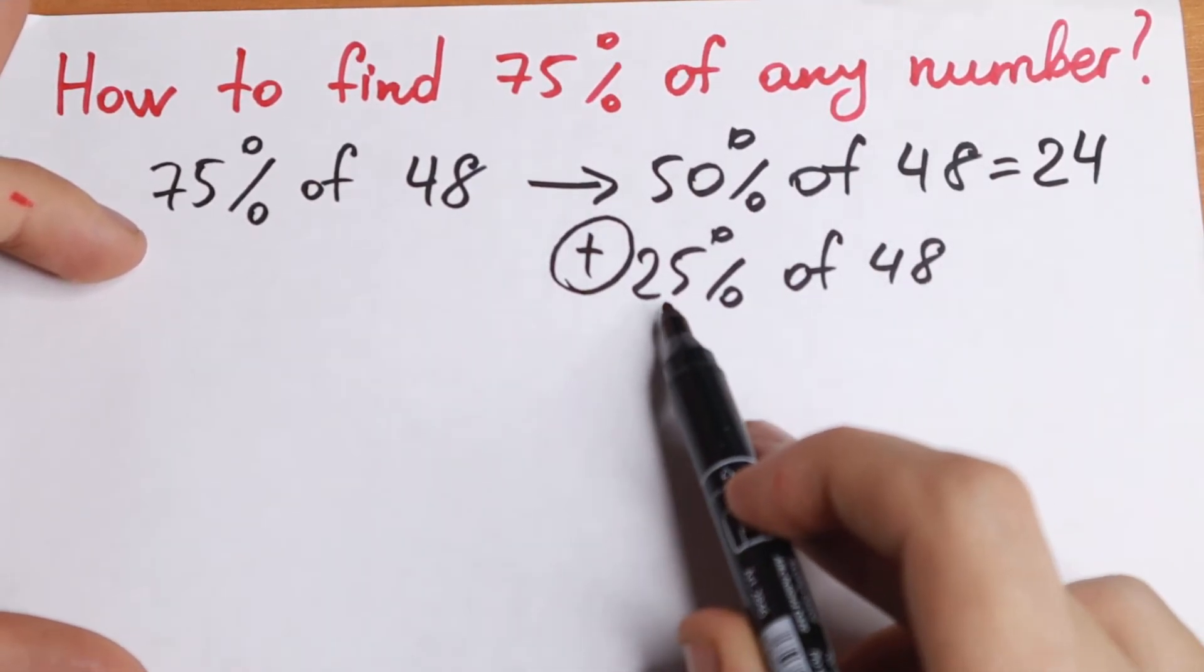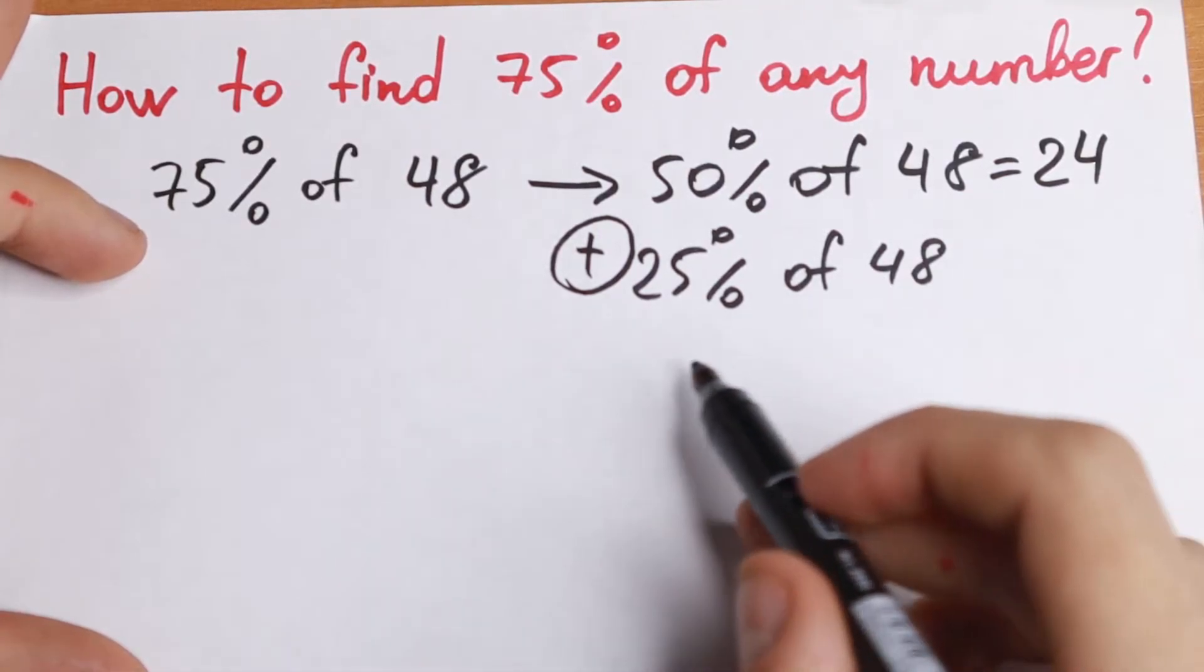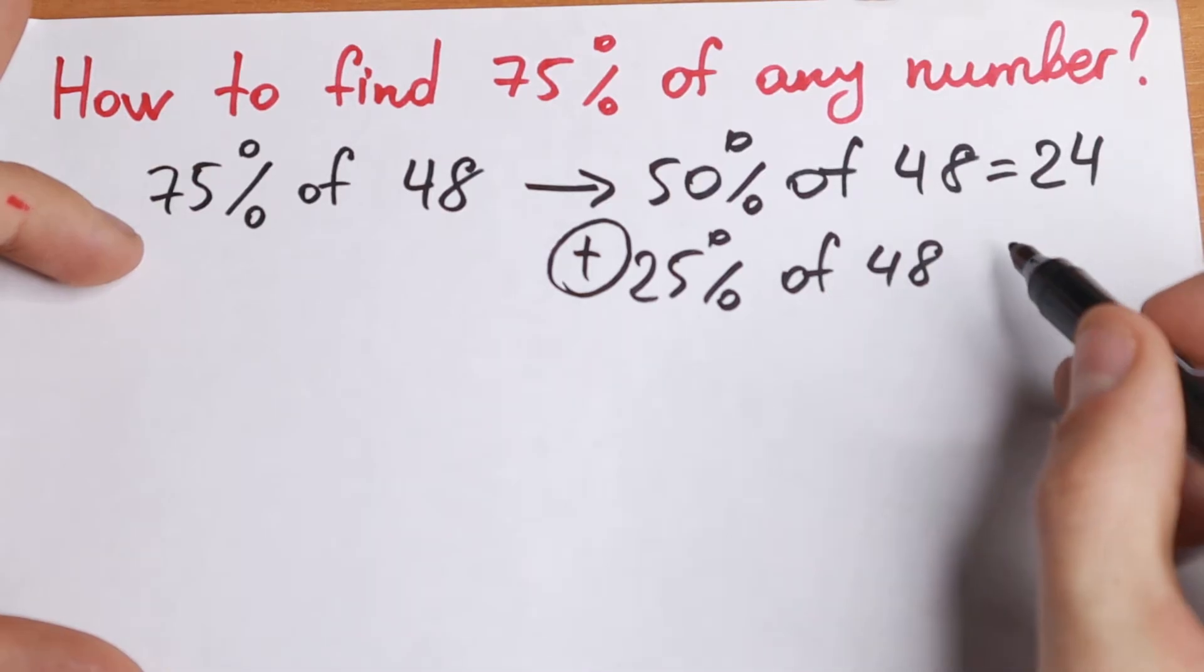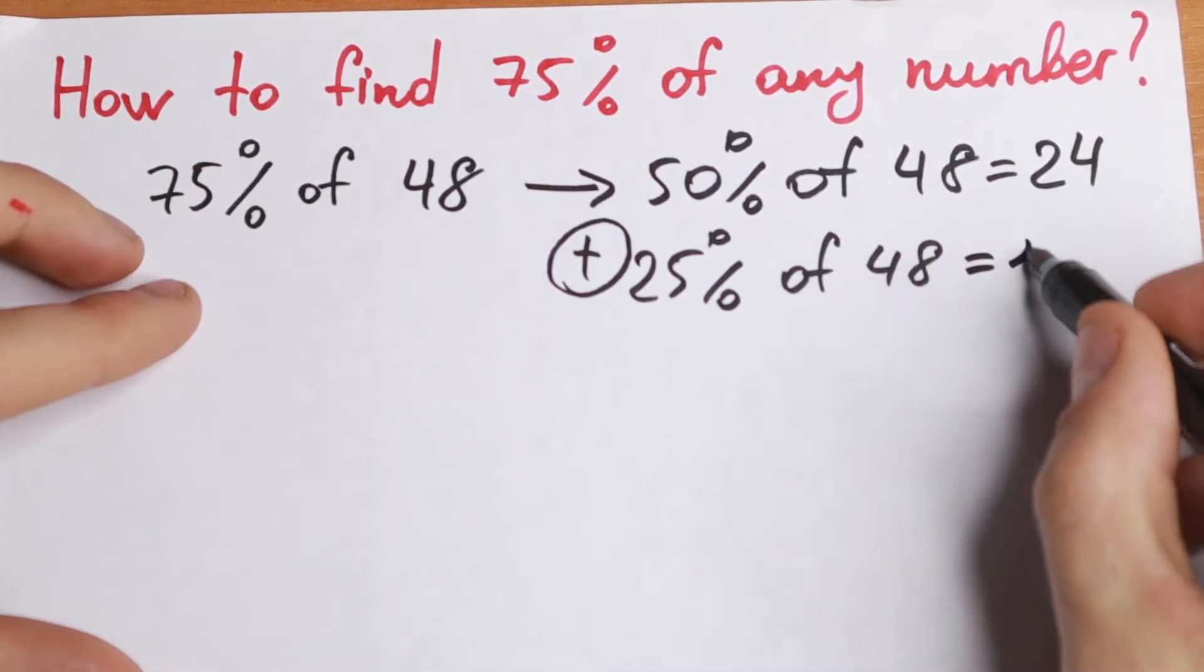And of course, 25% of this 48, this is a half of this 50%. So we just need to divide this 24 by 2, it is equal to 12.